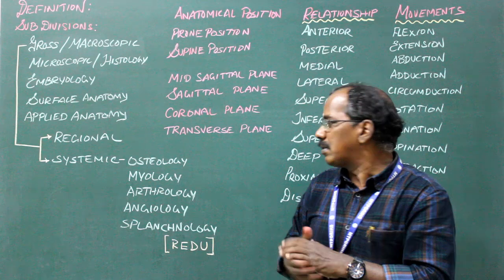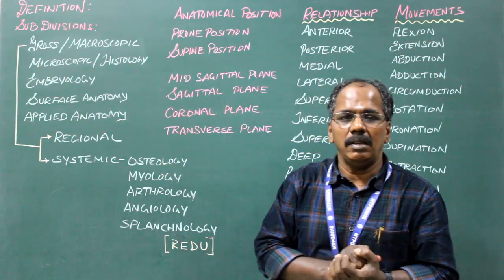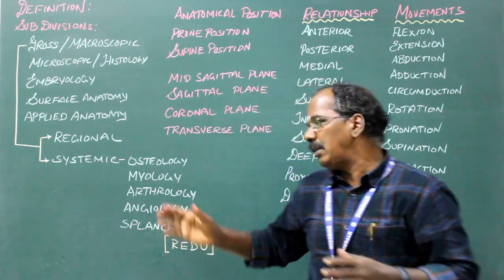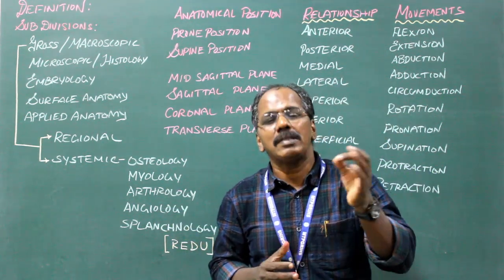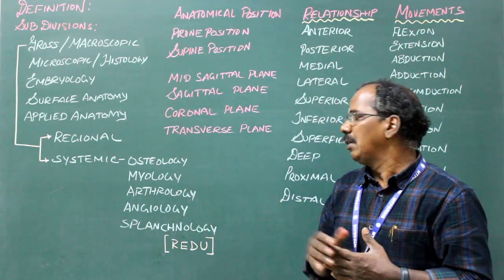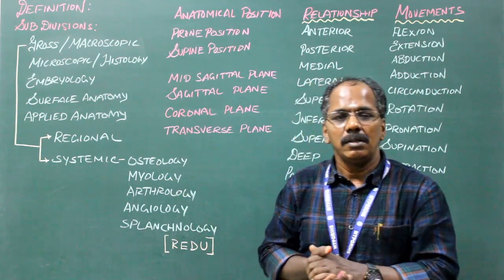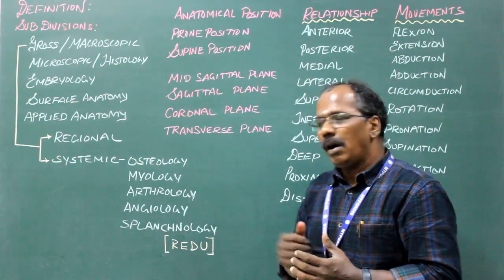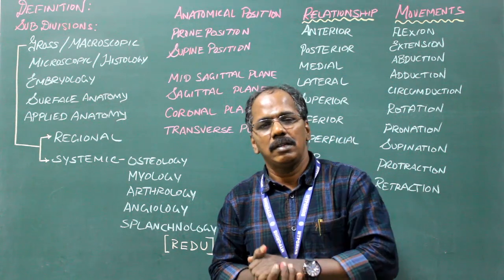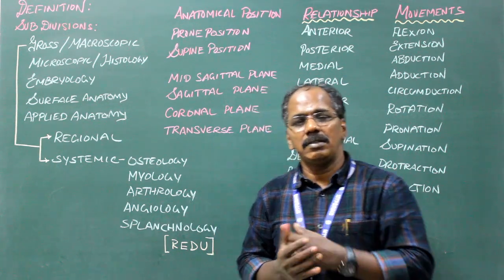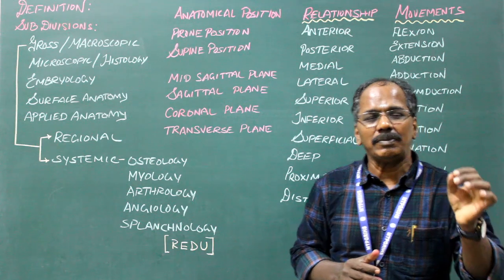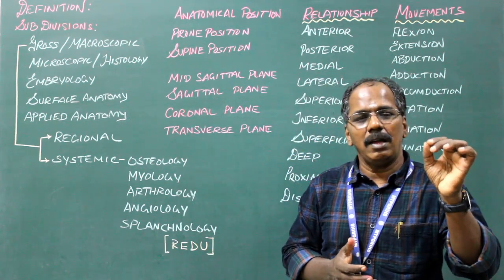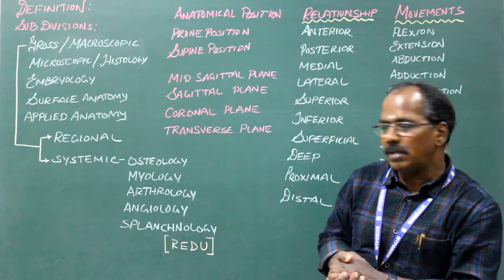Systemic anatomy includes osteology — 'osteo' means bone, 'logy' means study, so it is the study of bones, which is the skeletal system. Myology — 'myo' means muscle, so it is the study of muscles or the muscular system. Arthrology — 'arthro' means joints, so it is the study of joints. Angiology — 'angio' means blood vessels, so it is the study of blood and lymph vessels.